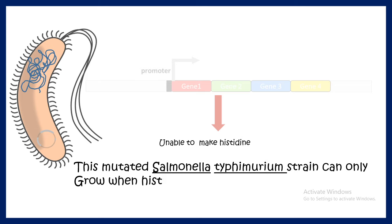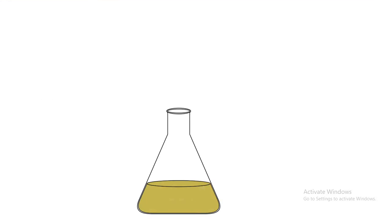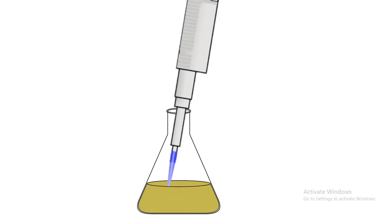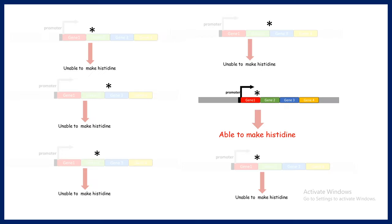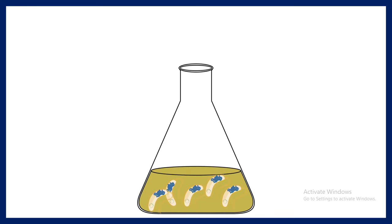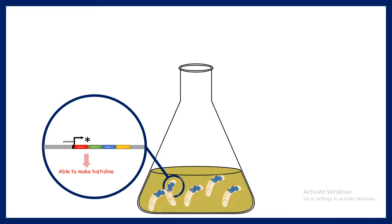Here comes the trick: you put your chemical of interest in a culture of these tester strains. If this chemical is mutagenic, it would be able to revert the mutation in the histidine operon for at least some of these bacteria. In those strains, the histidine operon would be functional again.